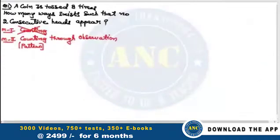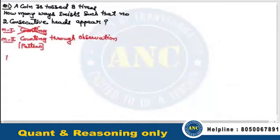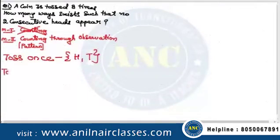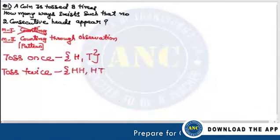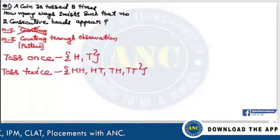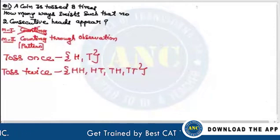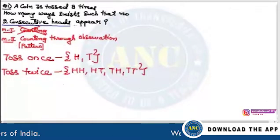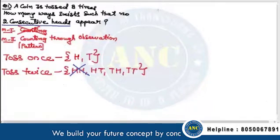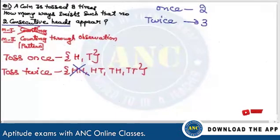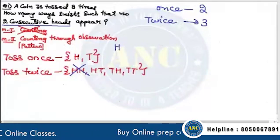If I toss once, how many ways will I get? Head or Tail — 2 ways. If I toss twice: Head-Head, Head-Tail, Tail-Head, Tail-Tail. Now with no two consecutive heads: toss once is 2 ways. Toss twice: Head-Head cannot appear, so 3 ways.